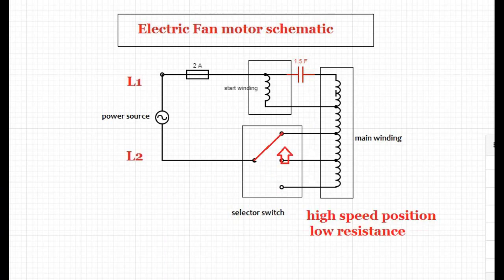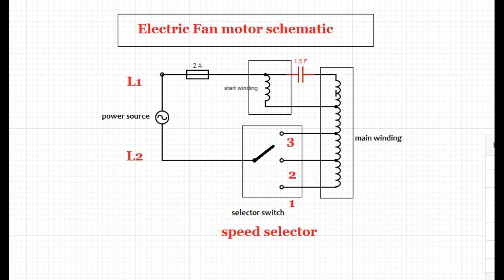By using a selector switch to choose the terminal to be connected to the line voltage, different speeds of the fan motor can be achieved. In the diagram above, there are three motor speeds that can be selected.